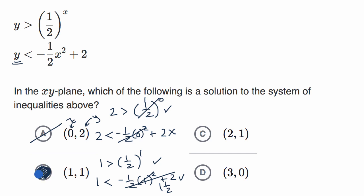And if I was taking the SAT, and if I was under time pressure, I'd be done. But we can verify that these two also won't meet these constraints. So let's see. When x is two, y is one. So one would have to be greater than one half to the two power, to the second power. So it is true that one is greater than one half squared is one fourth. So it meets that first condition.